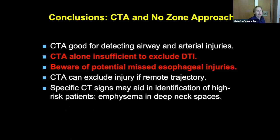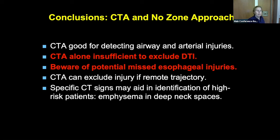To conclude: CTA is good for detecting airway and arterial injuries. It is not sufficient to exclude digestive tract injuries. So in a patient with what seems like an innocuous stab wound near the airway and esophagus who looks fine — be aware of missed esophageal injuries. CTA can exclude injury if the trajectory is clearly remote. And certain signs on CTA — like emphysema in the deep neck spaces — can aid in risk-stratifying patients who require early further evaluation.